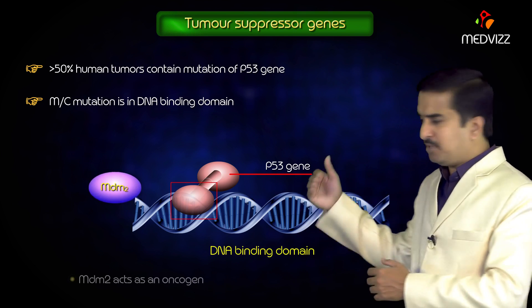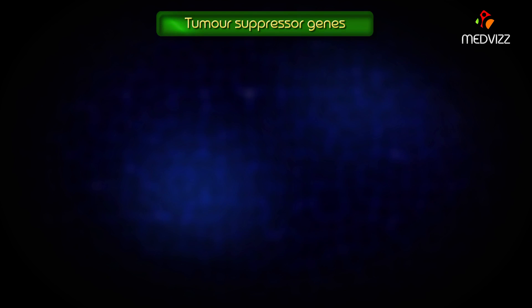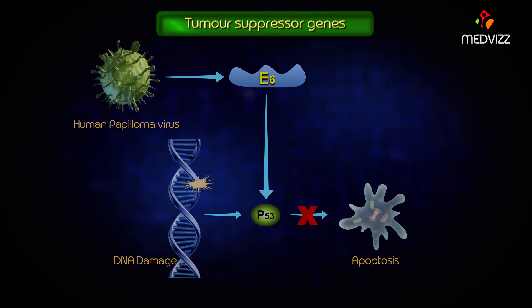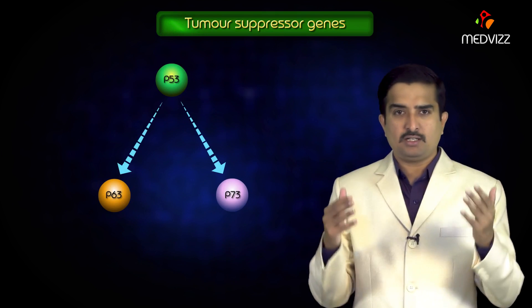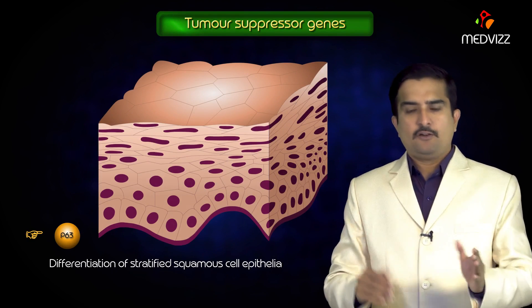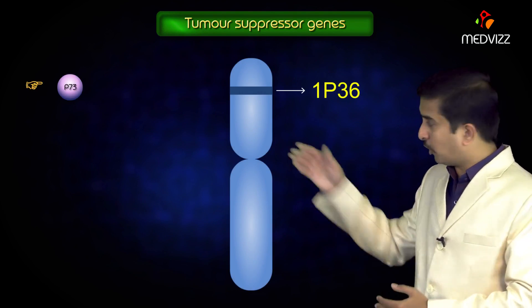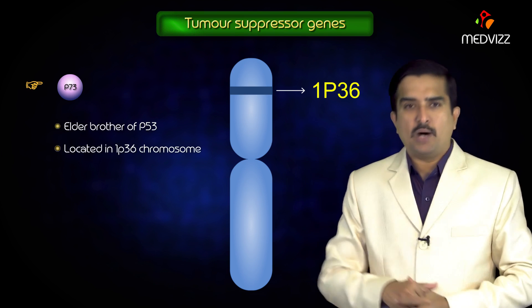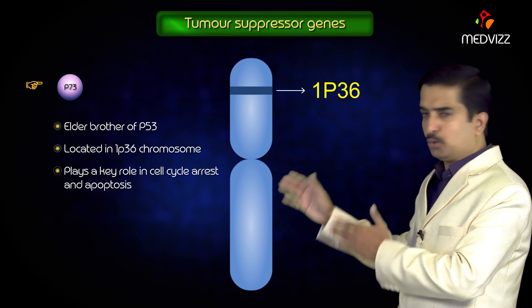p53 is down-regulated by MDM2, which acts as an oncogene. Another important protein, the E6 protein of human papilloma virus, inactivates p53. Like p53, there are p63 and p73, which are other family members of the p53 gene. p63 is responsible for differentiation of stratified squamous cell epithelium, and p73 — the elder brother of p53 — is located on chromosome 1 and plays an important role in cell cycle arrest and apoptosis, similar to p53.